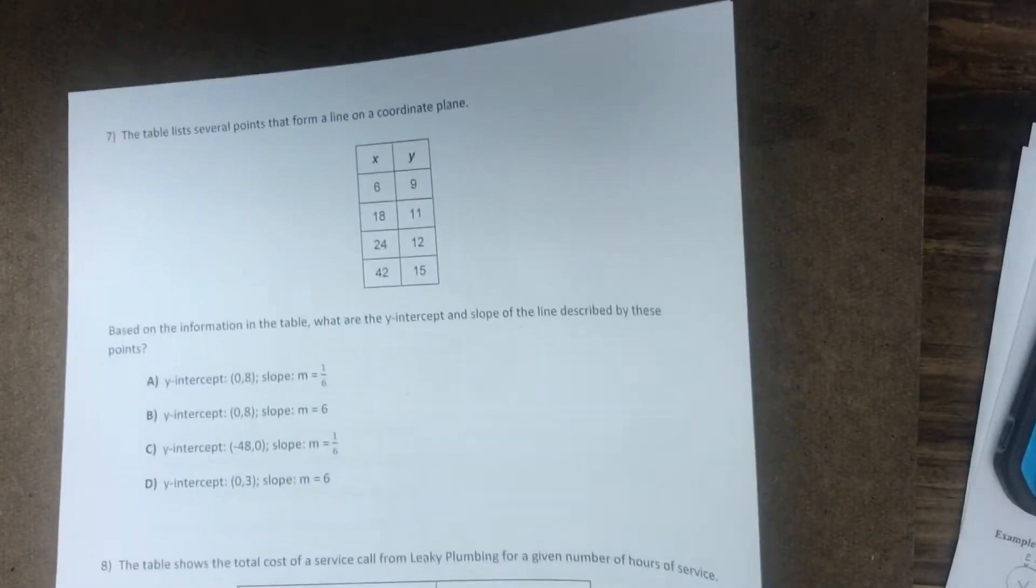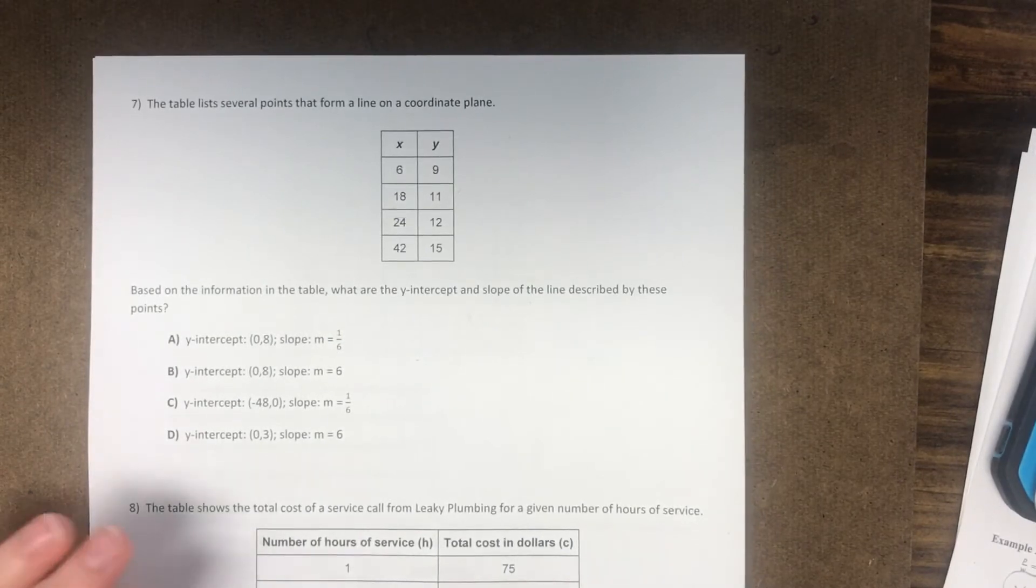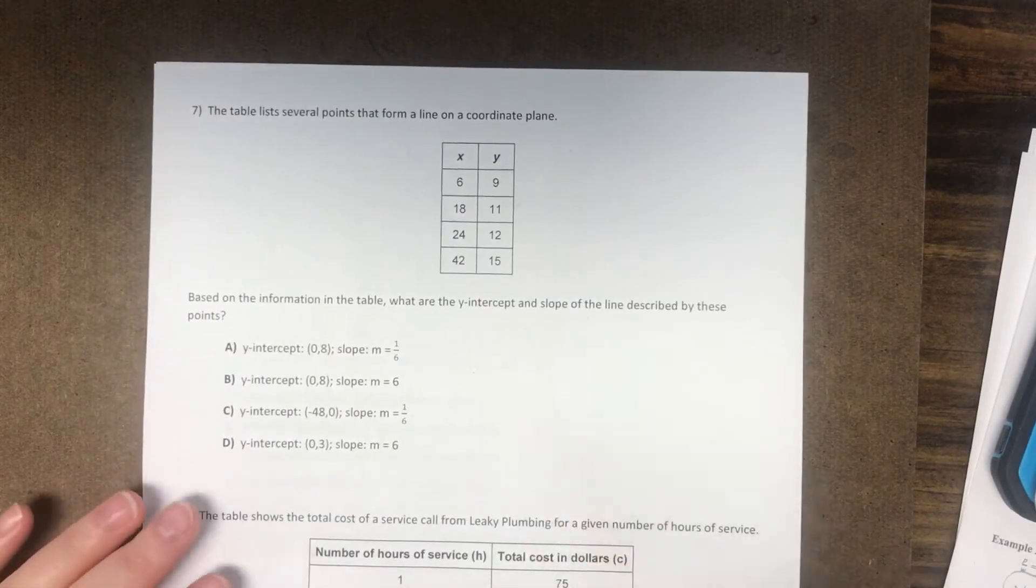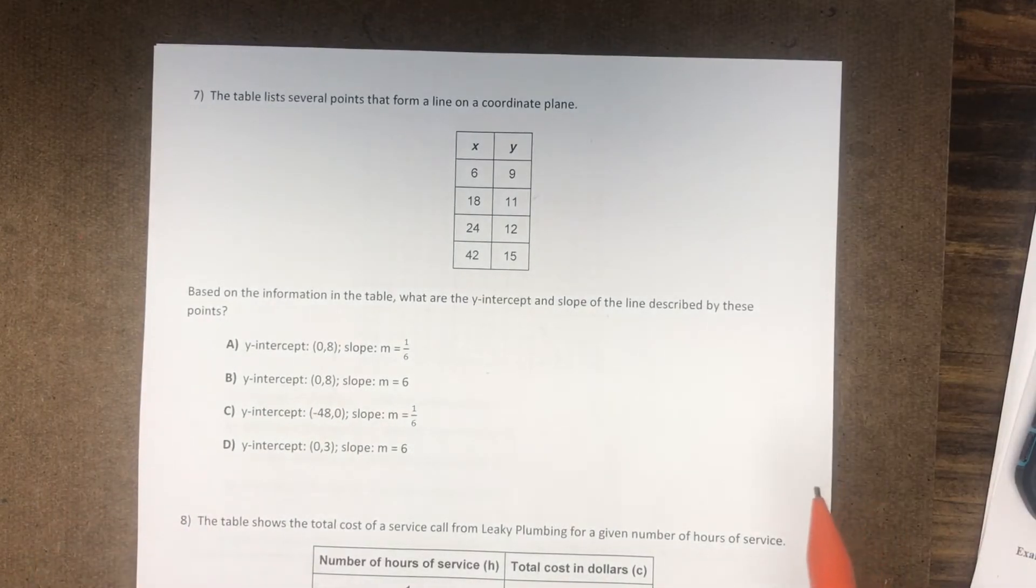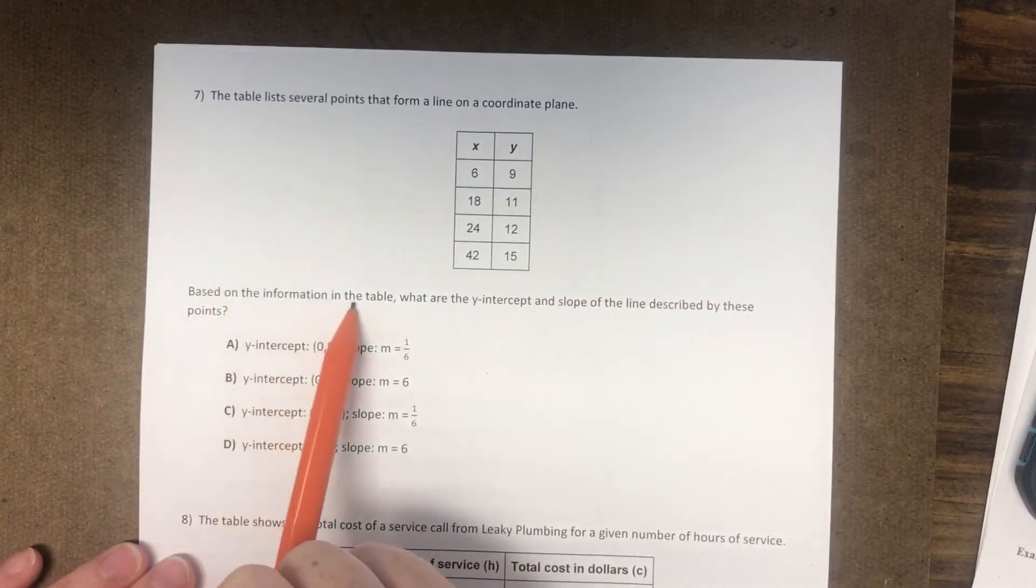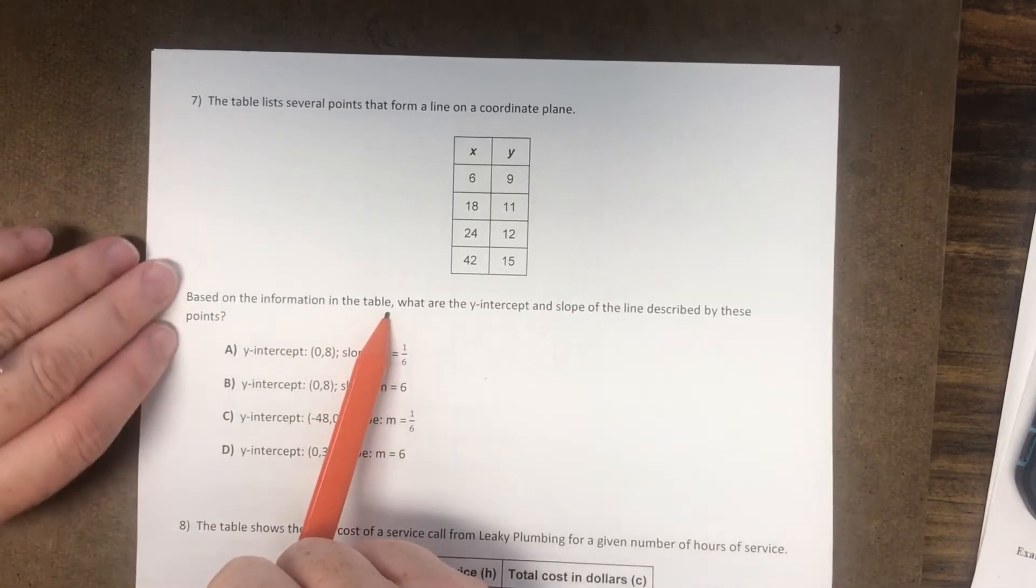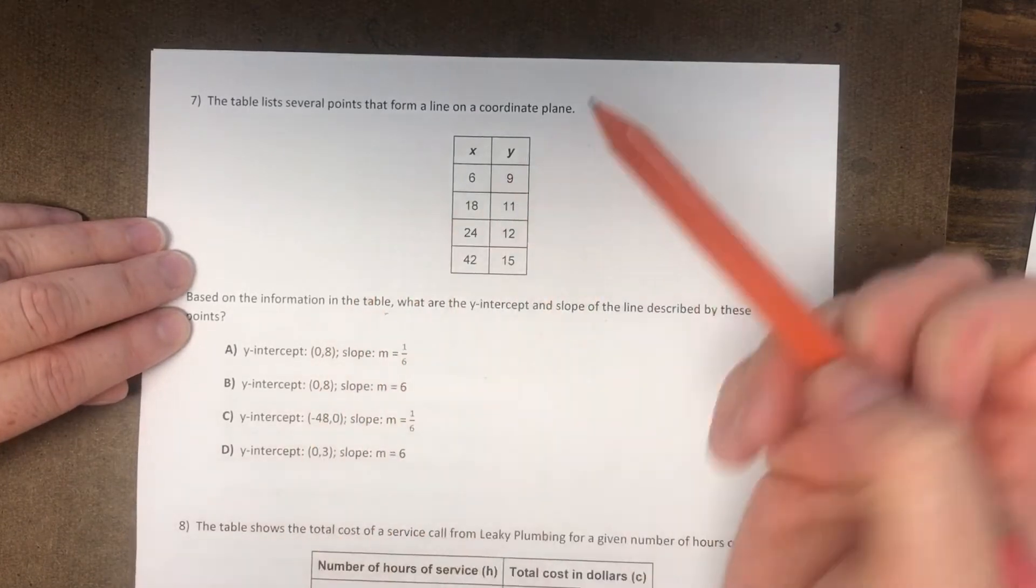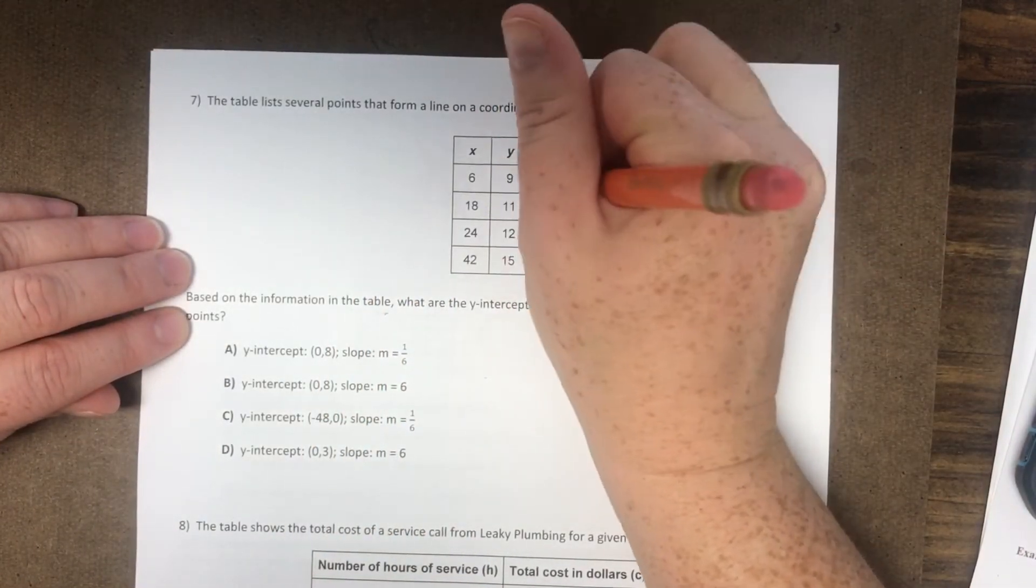Number 7. And there's two ways we talked about this. So I'm going to talk about how to solve it the first way, and then I'm going to show you the calculator steps. So number 7 says, the table lists several points that form a line on a coordinate plane. Based on the information in the table, what are the y-intercept and slope of the line by these points?